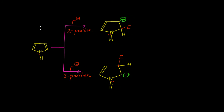Similar to benzene, all aromatic heterocyclic compounds such as pyrrole, thiophene, furan, and pyridine show electrophilic substitution reaction. In all these examples we have different positions where an electrophile may enter, and in this video we have to find out which positions are more predominant.